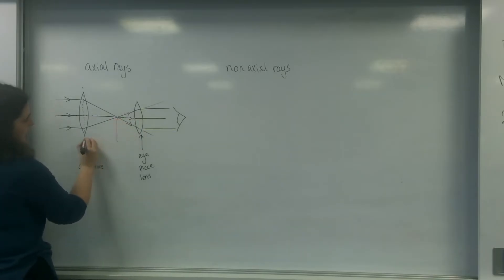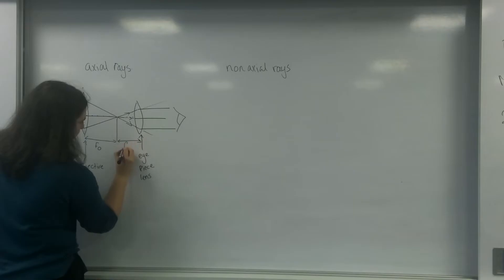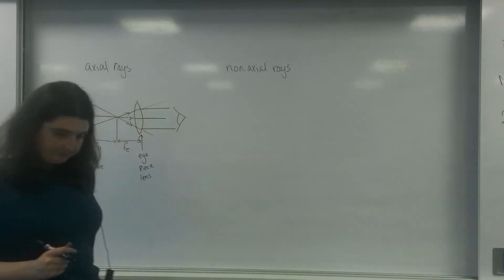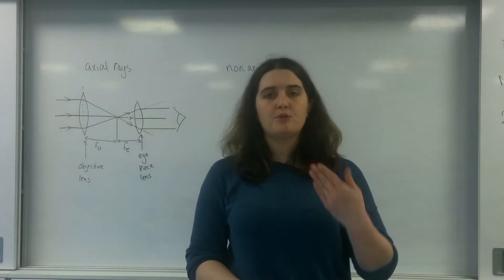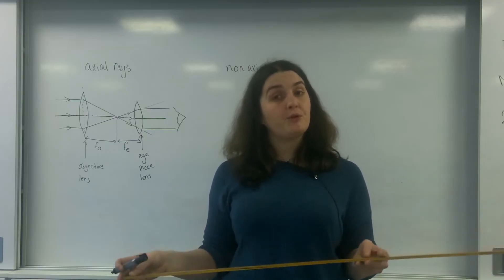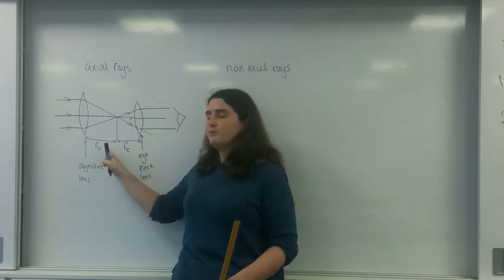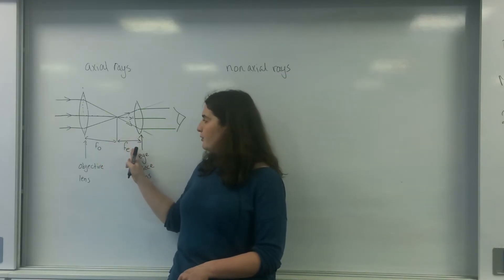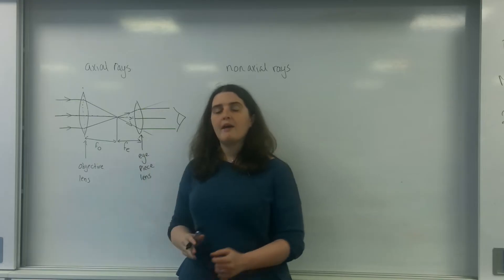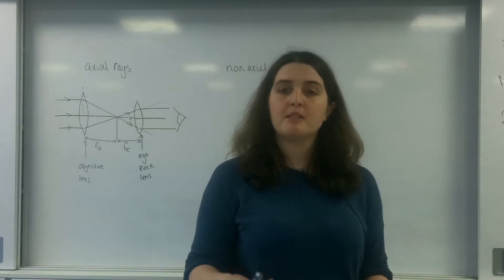The distance between here and here is the focal length of the objective lens. This length here is the focal length of the eyepiece. This is what's known as the normal adjustment: that the lenses are exactly the sum of their two focal lengths apart. So if the focal length of the objective was 10 centimeters and the focal length of the eyepiece was 5 centimeters, I would have them separated by 15 centimeters.